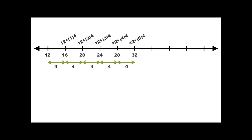So you can see that whichever term you want, starting from the first number, you have to add one less than that term number times the fixed number.